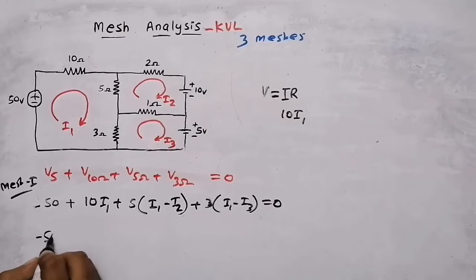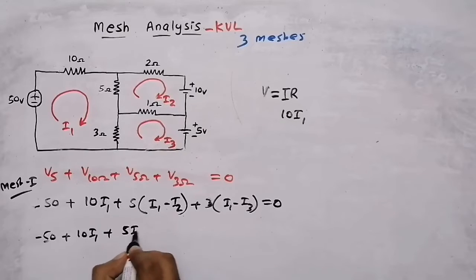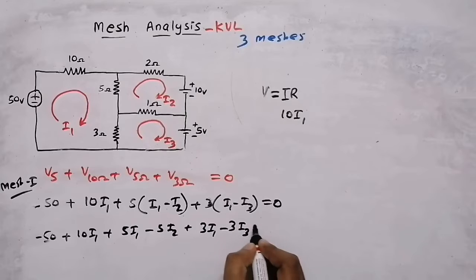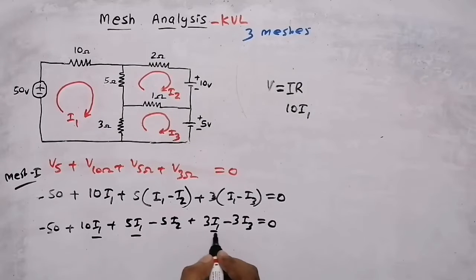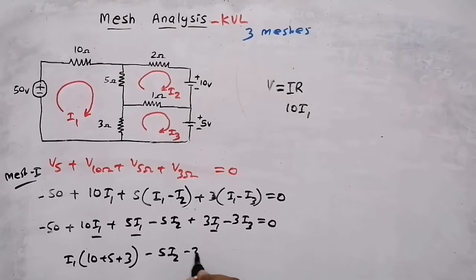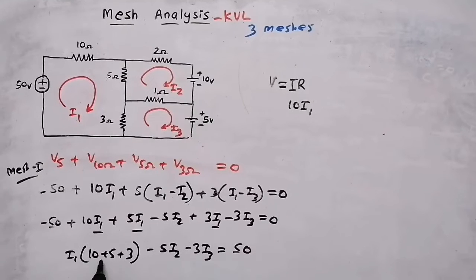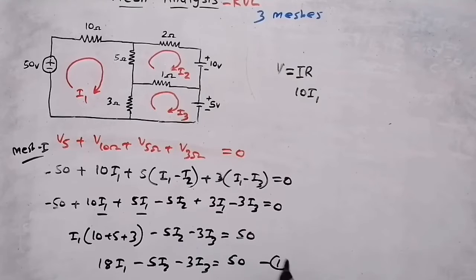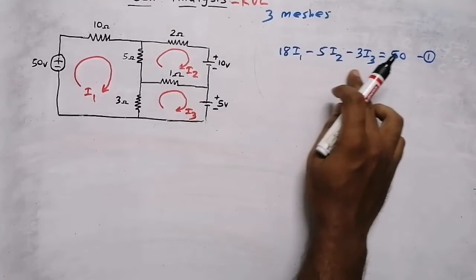Now expanding: minus 50 plus 10I1 plus 5I1 minus 5I2 plus 3I1 minus 3I3 equal to zero. Taking I1 outside: I1 times (10 plus 5 plus 3) minus 5I2 minus 3I3 equals 50. Since 10 plus 5 is 15 and 15 plus 3 is 18, we get 18I1 minus 5I2 minus 3I3 equal to 50. This is our first mesh equation.